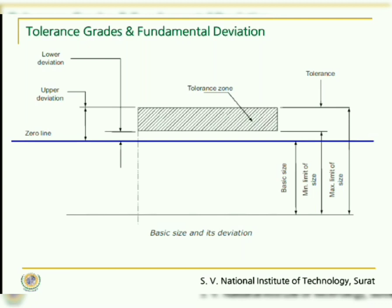Let us revise our understanding about the deviations. The blue line here indicates the zero line, which is the basic size. The tolerance zone shown indicates the upper limit as well as the lower limit. The upper limit indicates the upper deviation of the dimension from the zero line, and the lower limit of the tolerance zone indicates the lower deviation from the zero line. We wish to understand the concept of only fundamental deviation and tolerance so that the standards can be used.